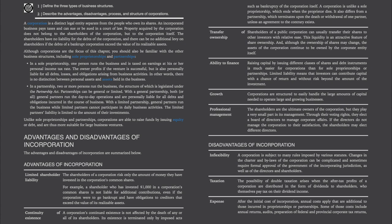Disadvantages of incorporation include inflexibility — a corporation is subject to many rules imposed by various statutes. Changes in the charter and bylaws can be complicated and sometimes require formal approval of the government of the incorporating jurisdiction as well as of the directors and shareholders. Taxation — the possibility of double taxation arises when the after-tax profits of a corporation are distributed as dividends to shareholders who themselves pay tax on their dividend income. Expense — after the initial cost of incorporation, annual costs apply, including annual returns, audits, preparation of federal and provincial corporate tax returns, the holding of shareholder meetings, and for many corporations, securities laws.